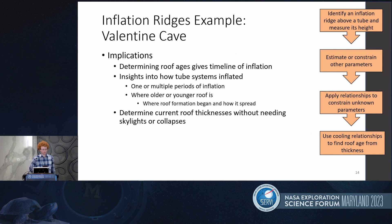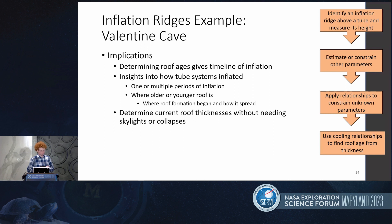Why this is significant: determining roof ages can give us a timeline of inflation, which can be applied to tube systems to tell how they developed — for instance, you could determine whether inflation occurred in one pulse or several different pulses over time. Also, by looking at roof ages in different locations, you can tell where the roof is older and younger, giving insights into how the tube formed and where roof formation began. Additionally, determining the current roof thickness without relying on skylights or holes into the tube could be useful for planetary tube applications.